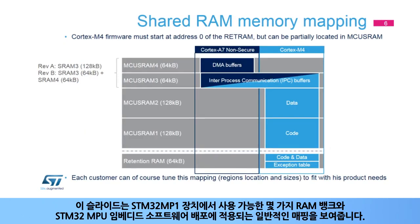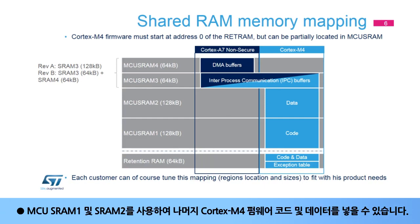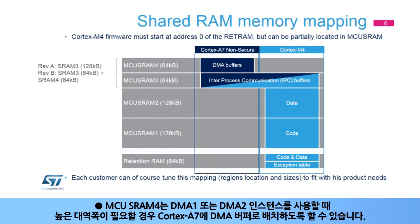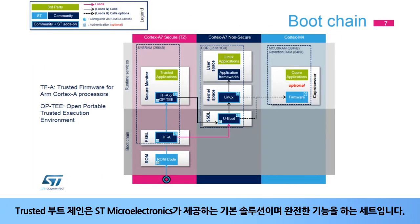This slide shows the several RAM banks available on STM32MP1 devices and the typical mapping applied on the STM32MPU embedded software distribution. The RET-RAM is used by the Cortex-M4 to put its vector table, plus some code and data. The MCU SRAM1 and SRAM2 can be used to put the remaining Cortex-M4 firmware code and data. The MCU SRAM3 is typically used to map the interprocess communication buffers. And the MCU SRAM4 can be reserved to put DMA buffers for the Cortex-A7 when high bandwidth is needed when using the DMA1 or DMA2 instances. It is not mandatory to align this mapping on region's borders, but this can represent an interest since hardware isolation for Cortex-M4 memories is supported with a per-bank granularity.